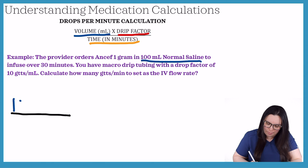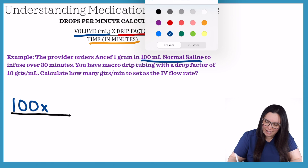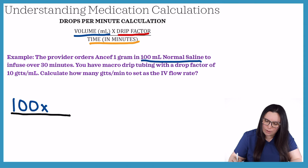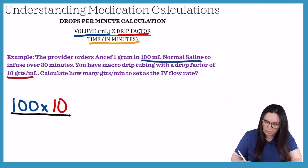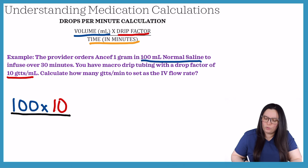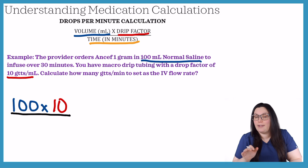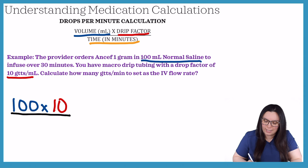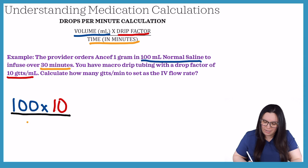We can go ahead and plug in our 100 mL. Next, we need to figure out our drop factor — we know that it's 10, so we plug that in. Lastly, we're looking at our time in minutes. This time we don't have to do any conversions; it was given to us directly as 30 minutes.